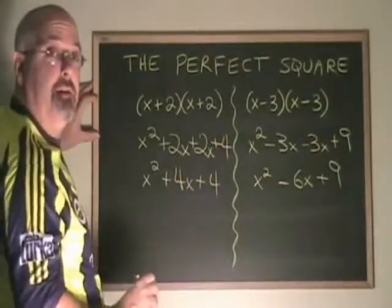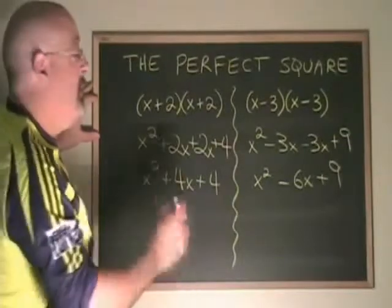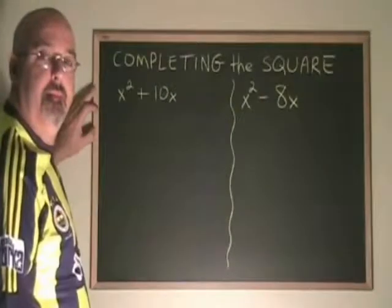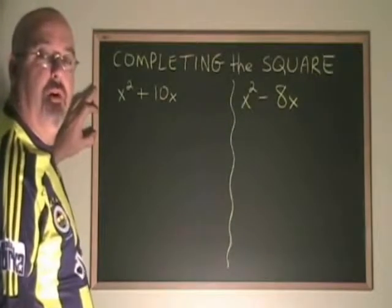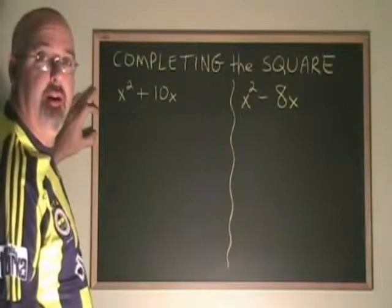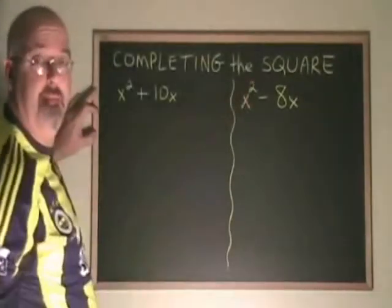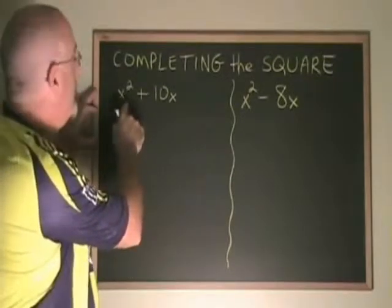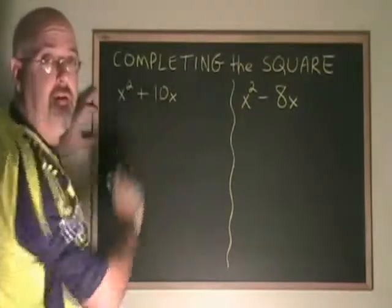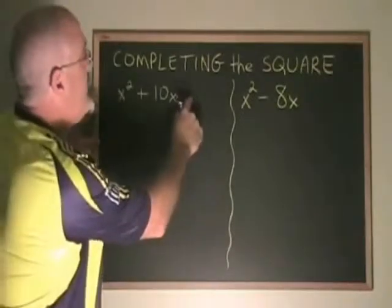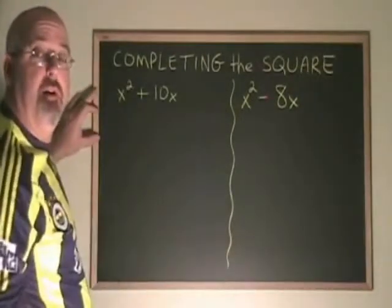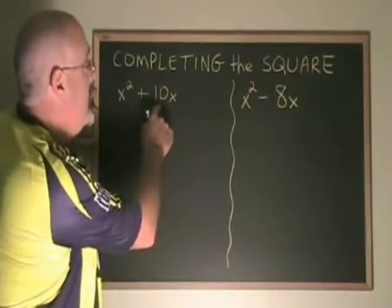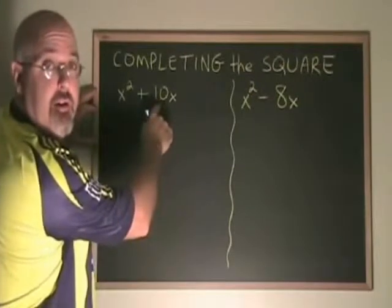Seeing this pattern helps us when we move on to other types of math where we have to do this backwards. What we have learned about the perfect square trinomial gives us a trick that we can use when we are completing the square. The question I am asking here is, if I am given a binomial with an x squared term and an x term, what constant term can I put in the third position to turn it into a perfect square trinomial?